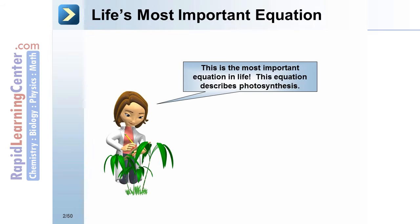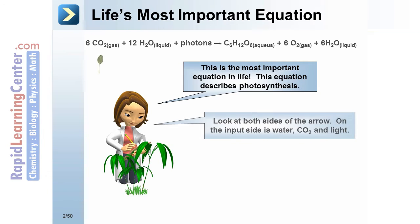This is the most important equation in life. This equation describes photosynthesis: 6 CO2 molecules plus 12 waters plus photons go to C6H12O6 carbohydrate plus 6 oxygen plus 6 water molecules.